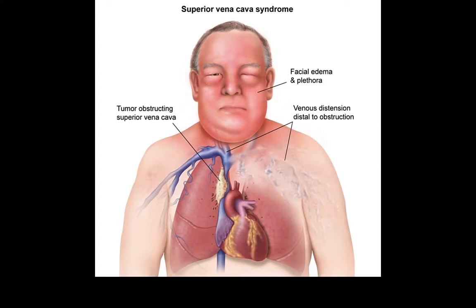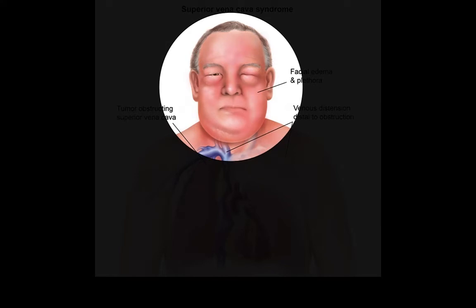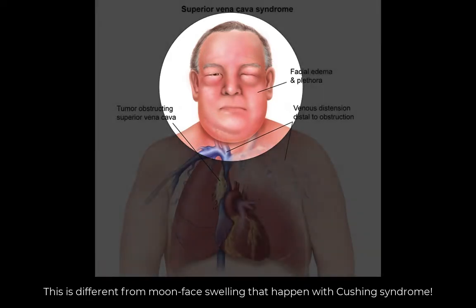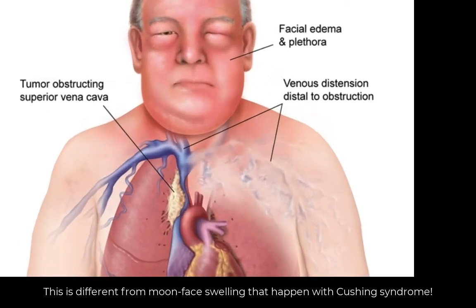If the superior vena cava becomes compressed, the patient may present with face, neck, and conjunctival swelling in the form of plethora and venous congestion. Distended veins on the chest may also be found due to venous distension distal to the obstruction.